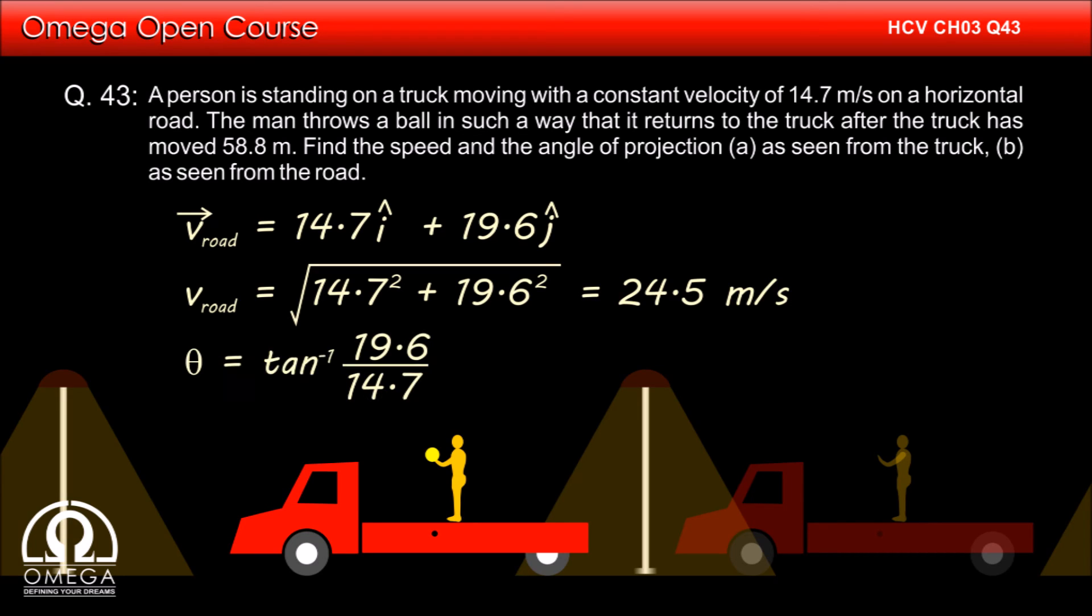The direction of the projection will be tan inverse of 19.6 divided by 14.7, that is tan inverse 4 by 3, which is equal to 53 degrees. This is answer to part B of the question.